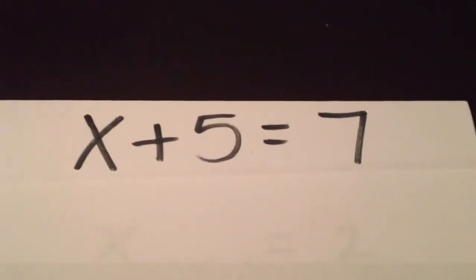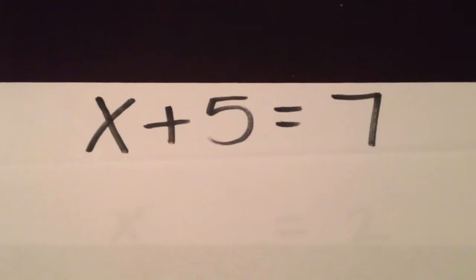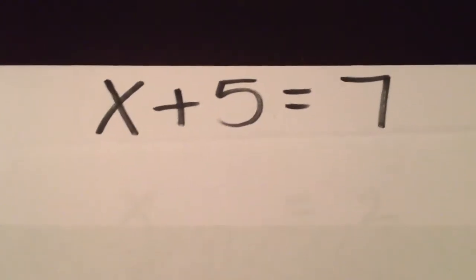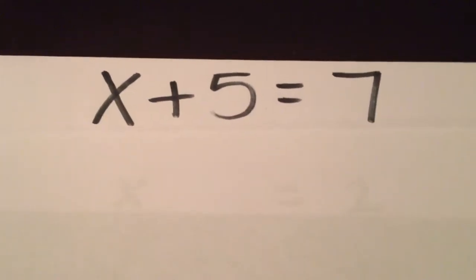I've been getting a lot of questions from students about why we do the opposite operation when we're solving an equation and why that cancels out and becomes zero.